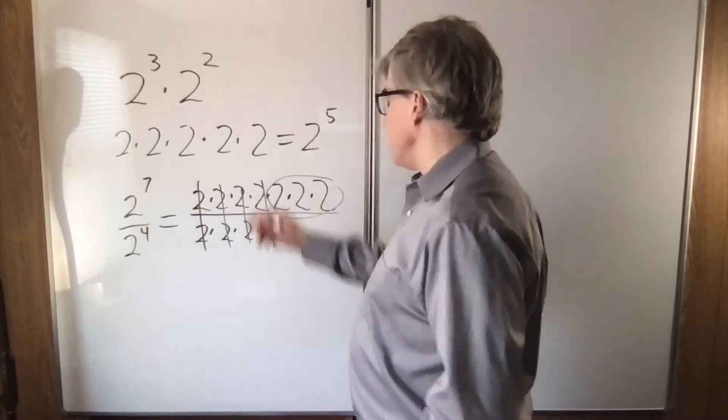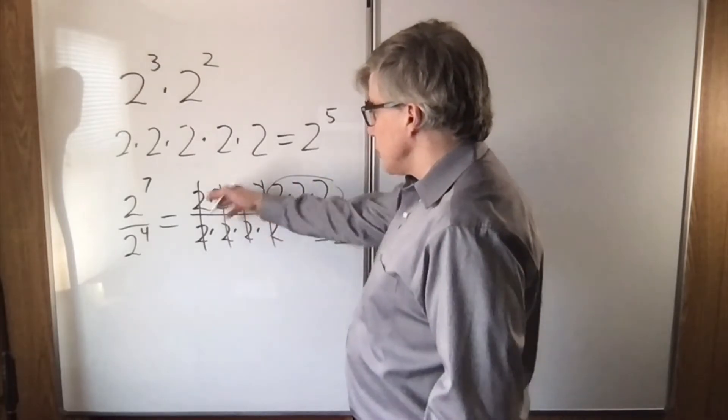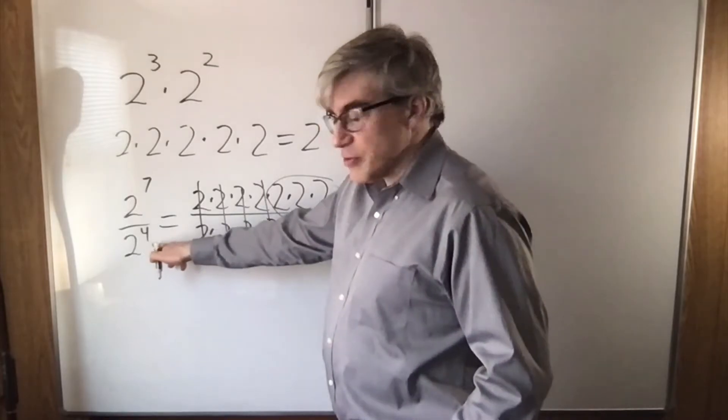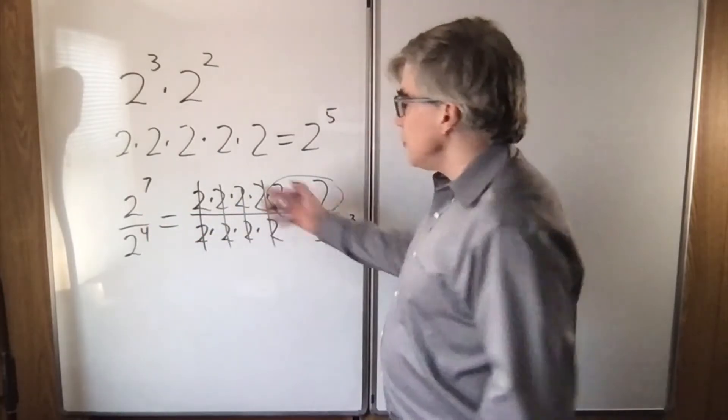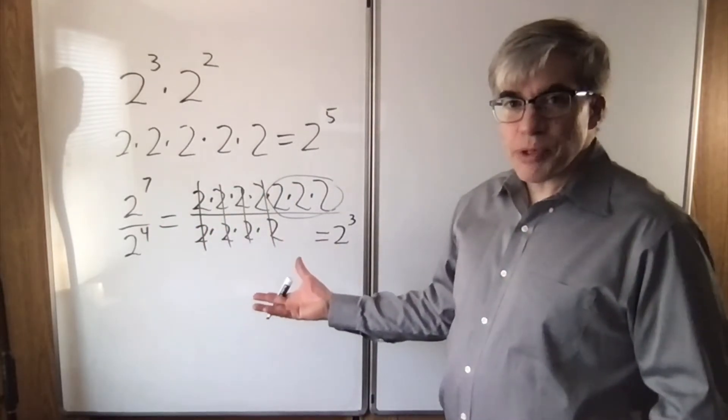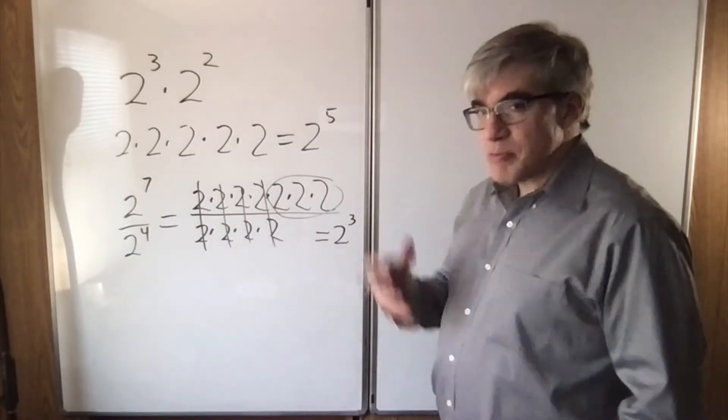We're left with three. Two to the third. There were seven of them, and we canceled out four of them. Seven minus four. If you just write out a small example like this, it becomes a lot more obvious.